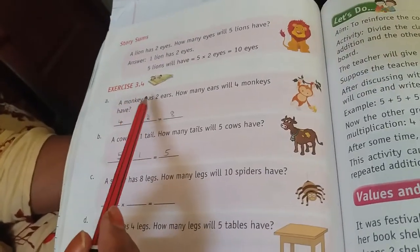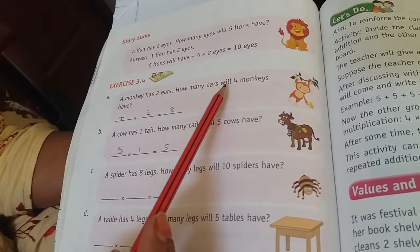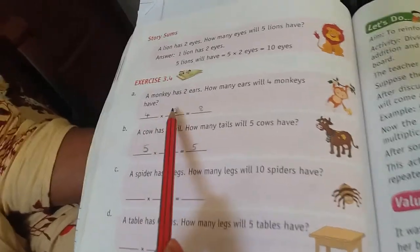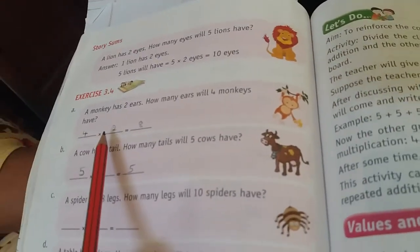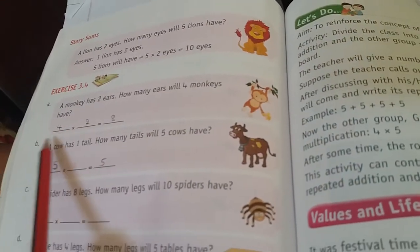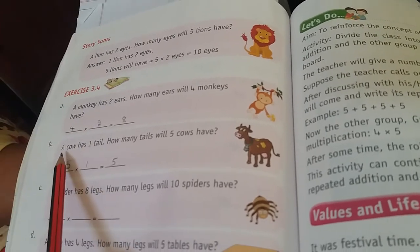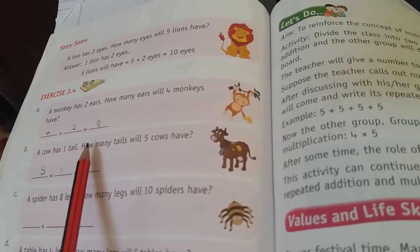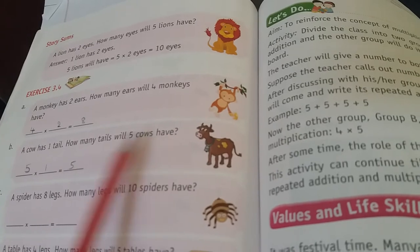Next, exercise number 3.4. A monkey has 2 ears. How many ears will 4 monkeys have? 4 monkeys, 4 into 2 is 8. Next, a cow has 1 tail. How many tails will 5 cows have?